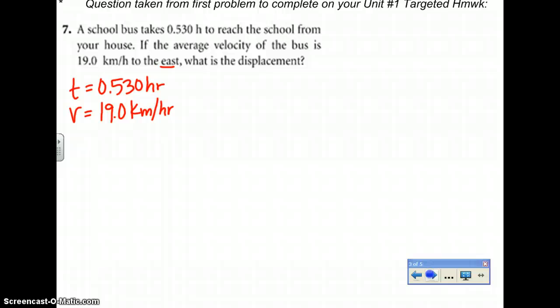So velocity is 19.0 km per hour. A little heads up: to the east implies that it's a positive 19.0 km per hour. A negative would apply towards the west, but we'll get there in the notes. Do you see anything else that is given to you, or anything else that's a constant that you would want to write down? No, there's nothing else here. So, what are we trying to solve for? It says, what is the displacement? The variable for displacement is lowercase x.